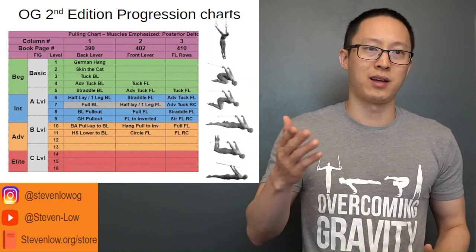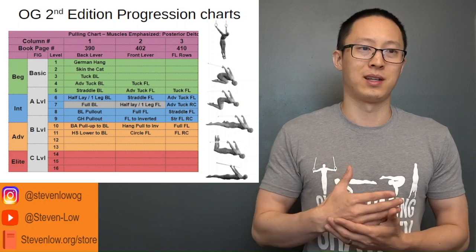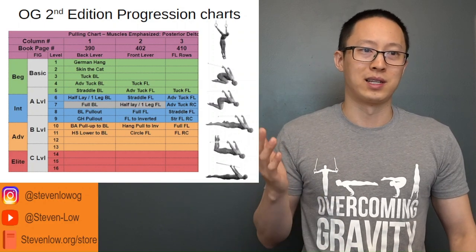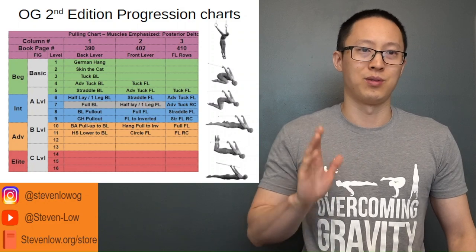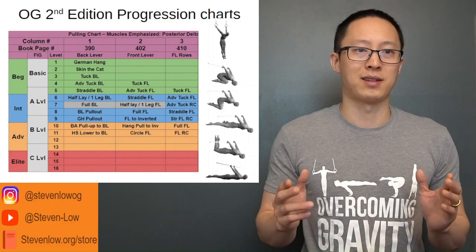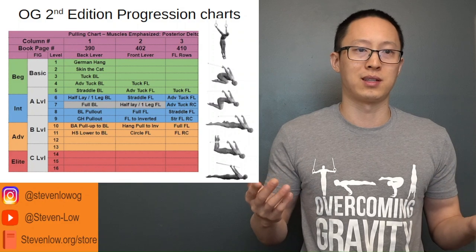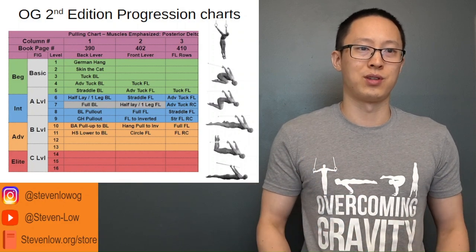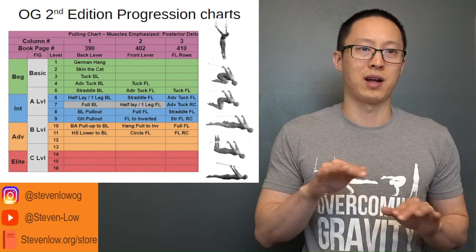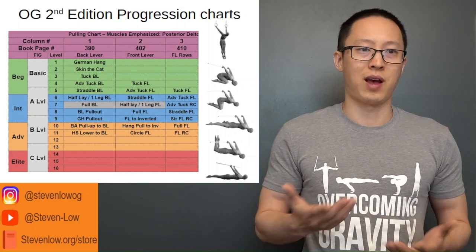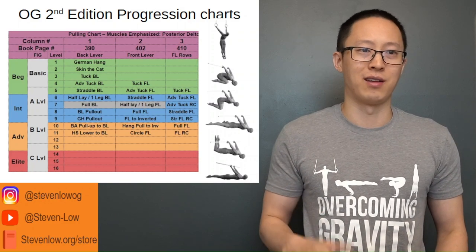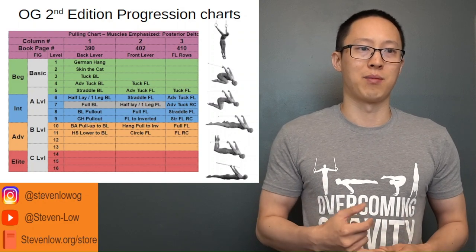In general, the German hang is one of the first things you learn — that's the top image on the right side. The skin the cat is basically a pullout from German hang to being inverted on the rings. As we covered, the center mass of the body gets further and further from the shoulders, which means it gets harder and harder as more torque is required at the shoulder. So you have your tuck progression, your advanced tuck where the legs are out and hips are at 90 with knees about 90 degrees, then the straddle, then the half layout or one leg out, and then full back lever.